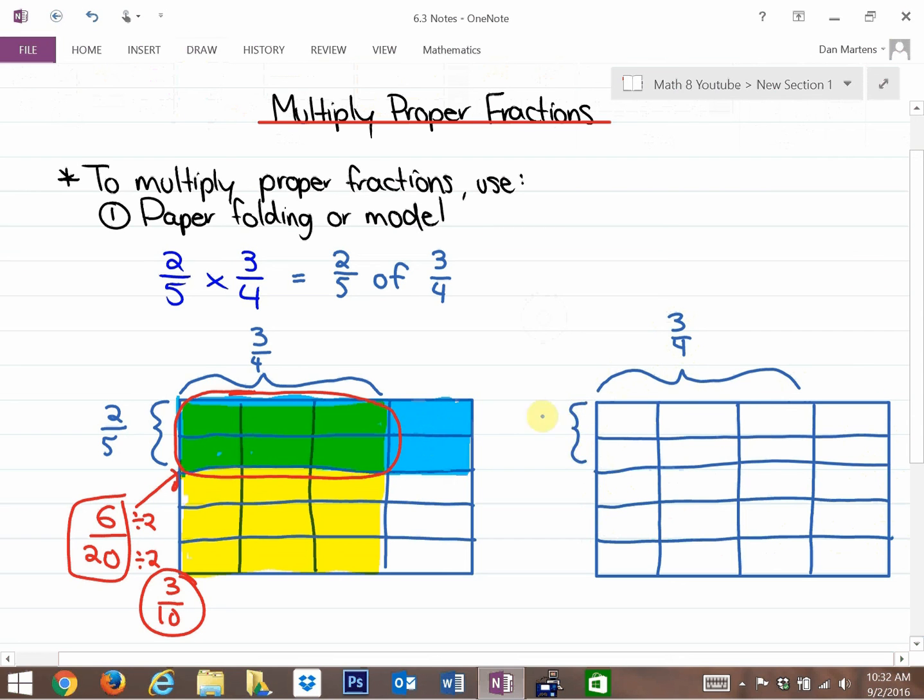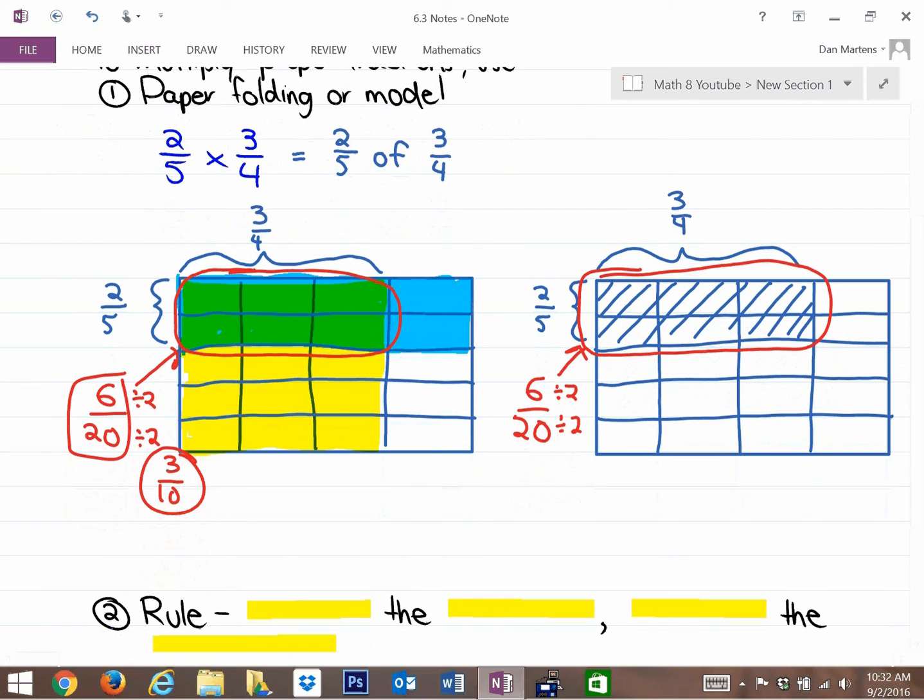So here's it broken into five rows. Here's two out of five, and these would overlap the two rows, and three columns would overlap in these six parts. So what you're noticing is, with a model, you get the exact same answer. So there's six parts out of 20 shaded. And if you divide that by two to reduce it to lowest terms, you get an answer of three-tenths.